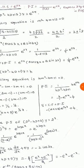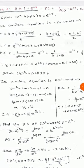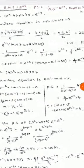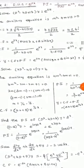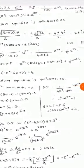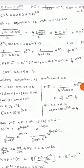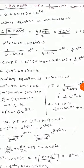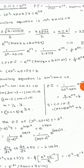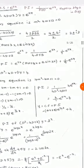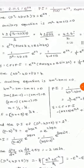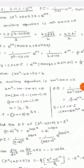The complementary function is e^(2x)·(a·cos(3x) + b·sin(3x)). Therefore the complete solution is y = e^(2x)·(a·cos(3x) + b·sin(3x)) + (1/9)·e^(2x).